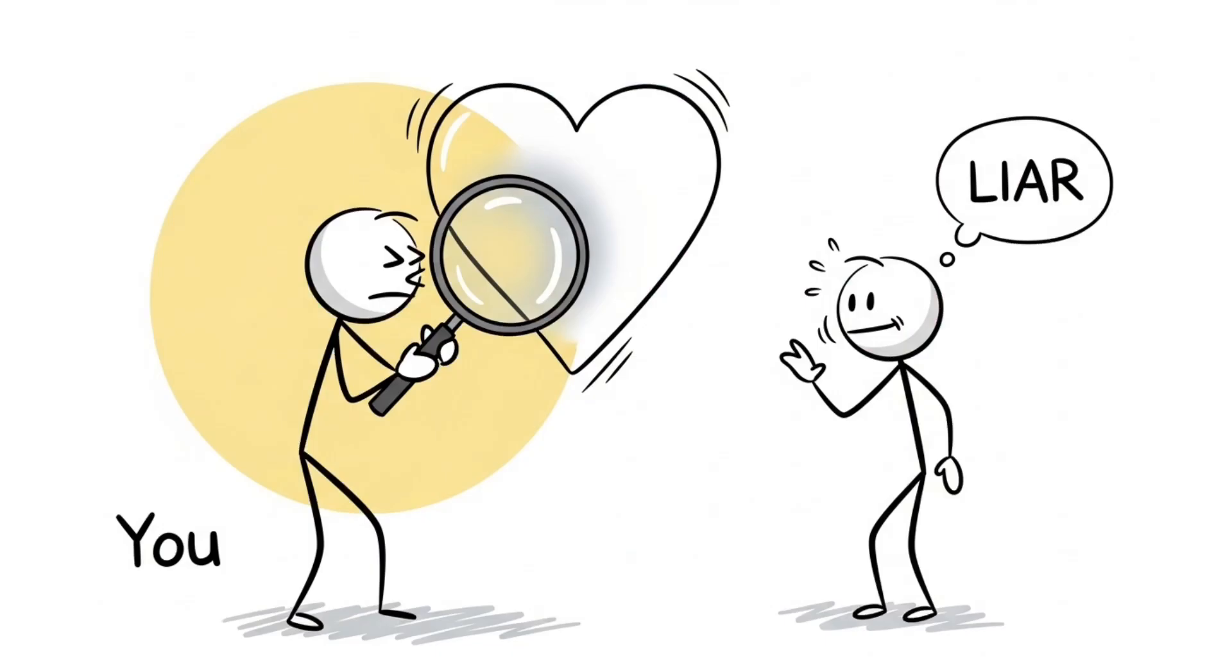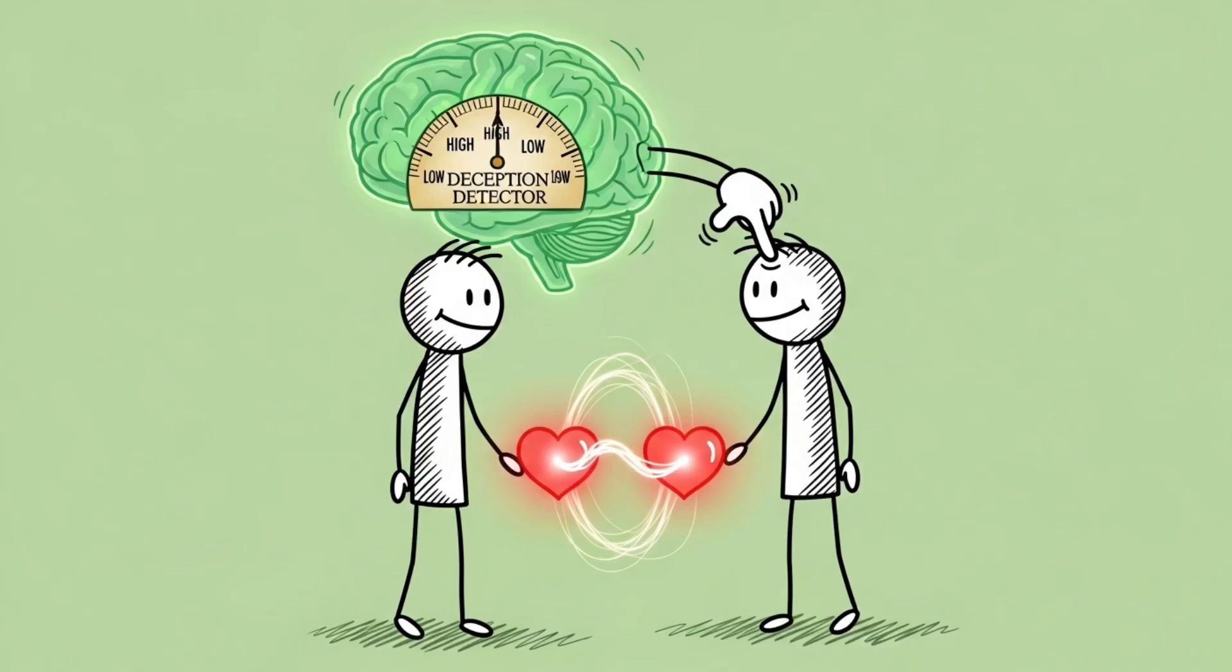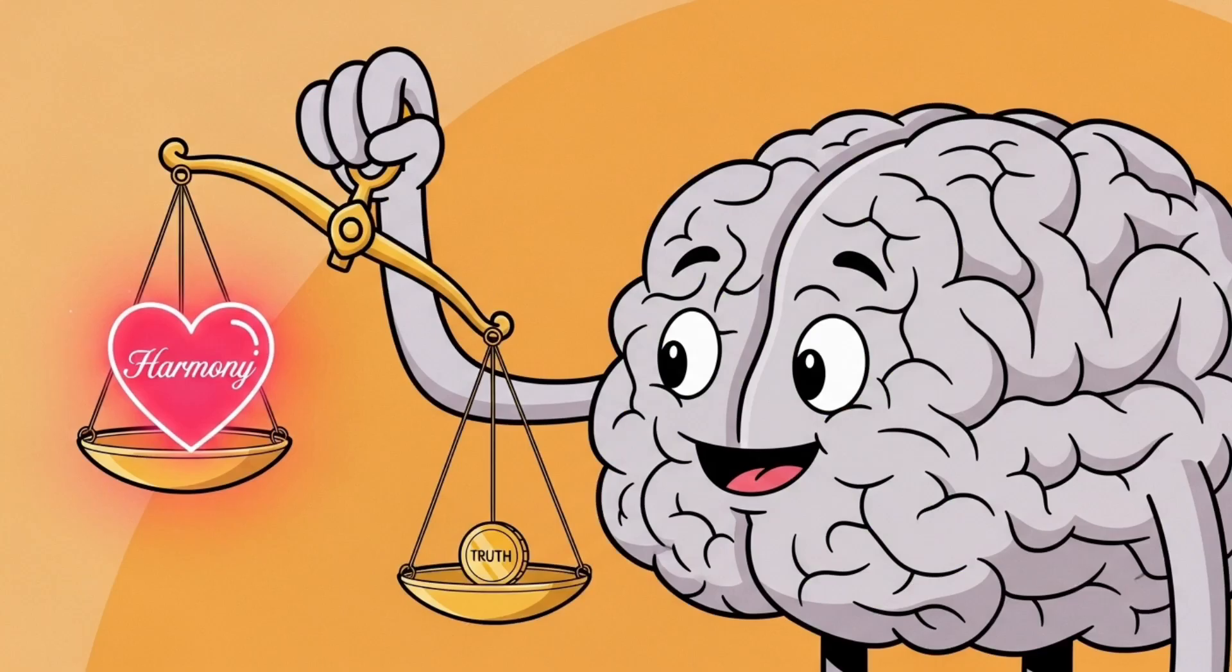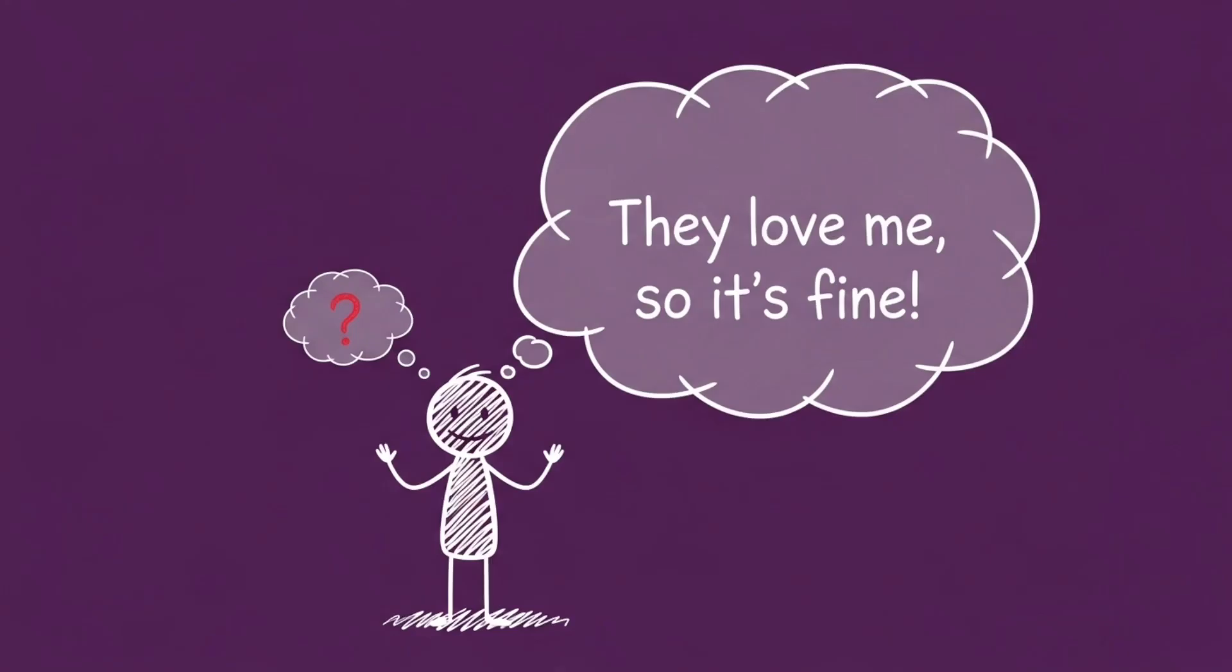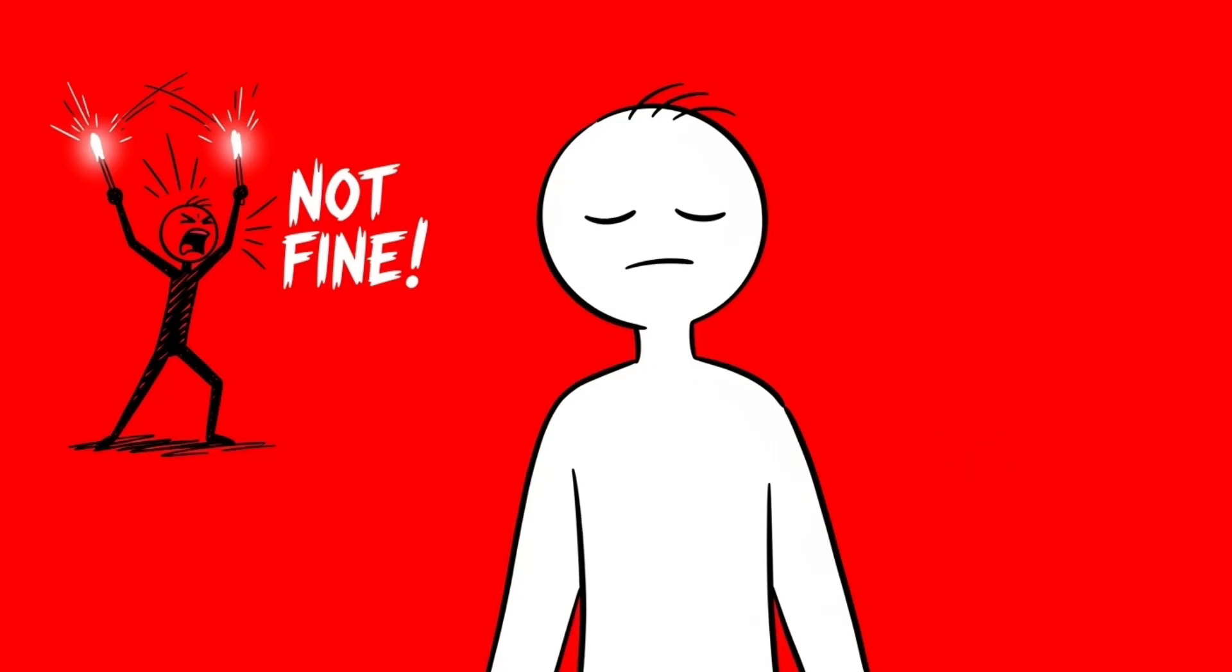Number five, the empathy delay. Here's something uncomfortable. Empathy makes you bad at spotting lies. The more emotionally connected you are to someone, the worse your brain becomes at detecting deception. Why? Because your brain values harmony over truth. When you care about someone, your brain filters out red flags faster than a PR team after a scandal. It's like, hmm, that sounded suspicious, but they love me, so it's fine.